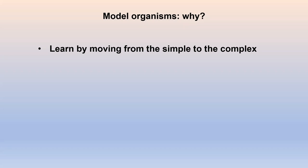So why do people use model organisms? One reason is that we like to learn by moving from simpler organisms to more complex ones. I've always found this description confusing when I think about fruit flies, because I couldn't walk on six legs and move wings at the same time. I think fruit flies are reasonably complicated, but from a human-centric point of view, they are simpler. If we can understand basic principles in simple organisms, then we can elaborate and add more detail and complexity as we go.